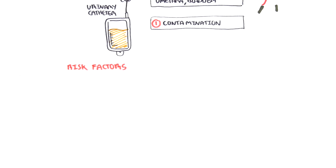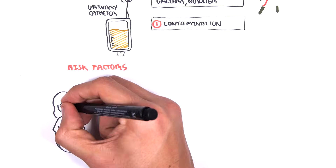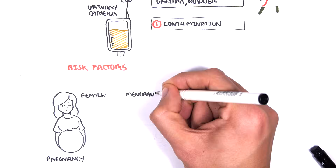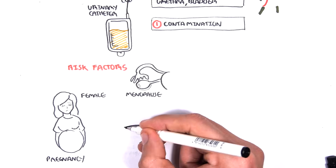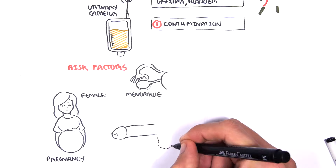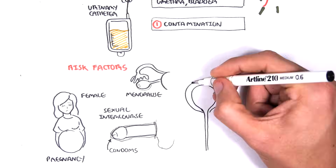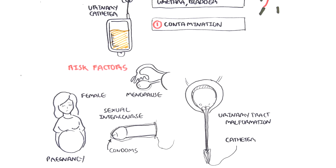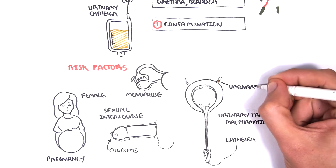Risk factors for UTIs include pregnancy, being female, menopause — because it is dry in the vagina and urethra — sexual intercourse, condoms, catheterization, urinary tract malformation, and urinary stones.